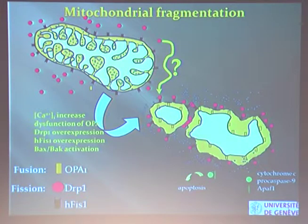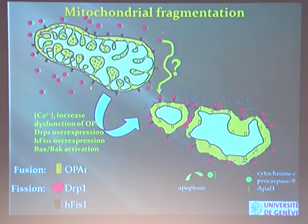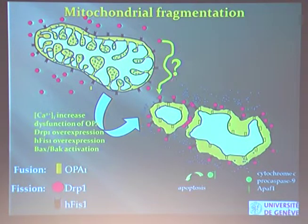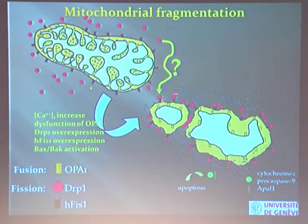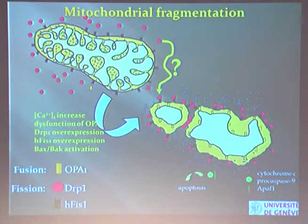Fission is performed by a protein that is in the cytoplasm. The fission protein DRP1 is cytosolic, and only upon stimulation does it move from the cytosol to mitochondria, where it docks to a small protein called FIS1 and oligomerizes. This means several proteins work together and squeeze the mitochondrial membrane, producing pieces of it.